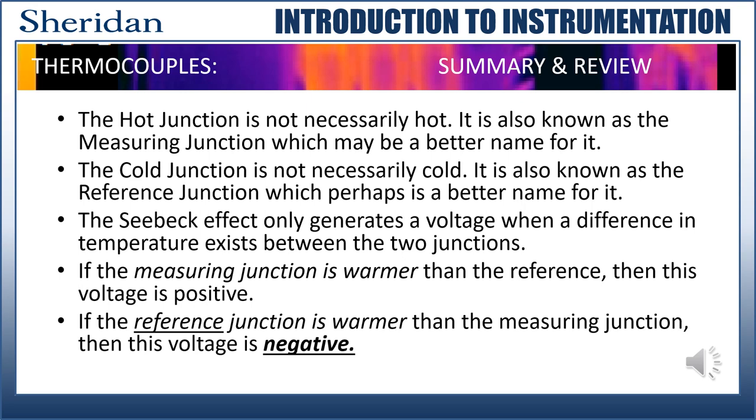We've covered a lot of ground, so let's take a moment and do some review. First of all, the hot junction. It's not necessarily hot. It's also known as the measuring junction, which is probably a better name for it. The cold junction is not necessarily cold. It's also known as the reference junction, which is a better name for it. The Seebeck effect only generates voltage when there's a difference in temperature between two junctions and you're using dissimilar metals to create the effect. If the measuring junction is warmer than the reference, then the voltage is positive. So by extension, what does that mean if it's negative? Well, then that means that the reference junction is warmer than the measuring junction.